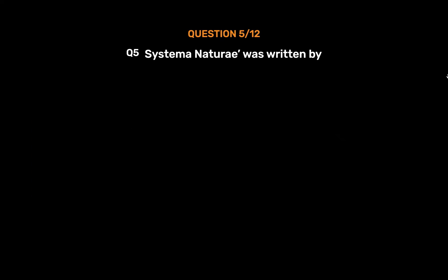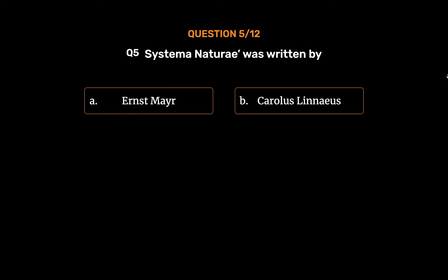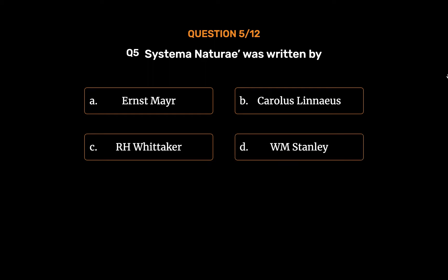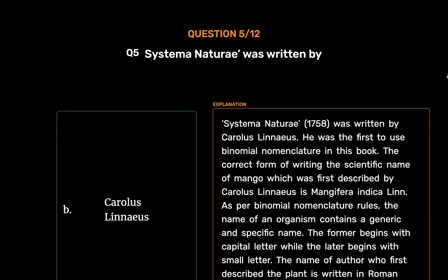Question No. 5. Systema Naturae was written by. Option A: Ernst Mayr. Option B: Carolus Linnaeus. Option C: R. H. Whittaker. Option D: W. M. Stanley. Option E: M. W. Beijerinck. The correct answer is Option B: Carolus Linnaeus. Systema Naturae, 1758, was written by Carolus Linnaeus. He was the first to use binomial nomenclature in this book. As per binomial nomenclature rules, the name of an organism contains a generic and specific name. The former begins with a capital letter while the latter begins with a small letter. The name of the author who first described the plant is written in Roman script and it is written in abbreviated form.